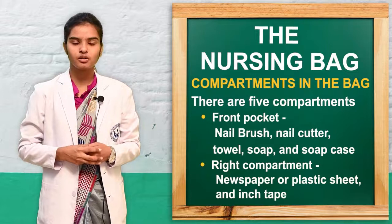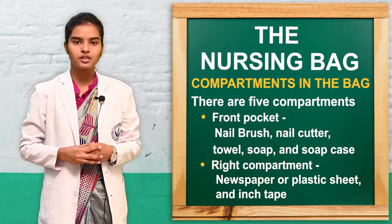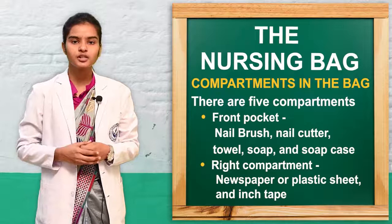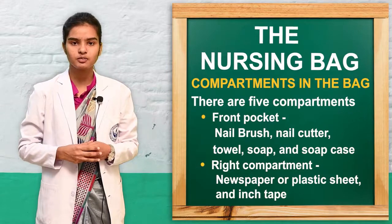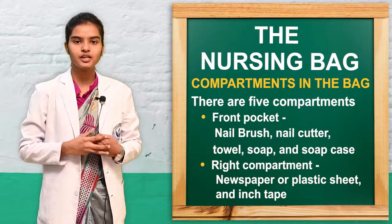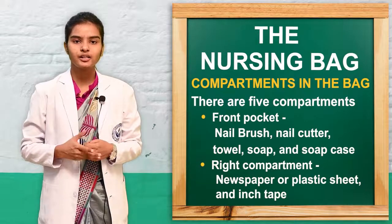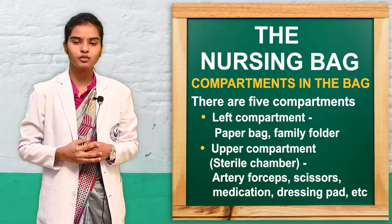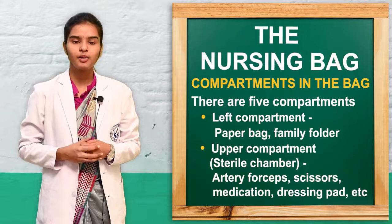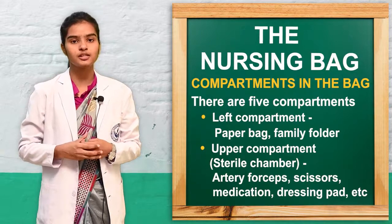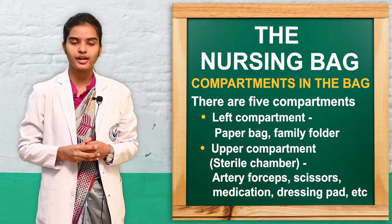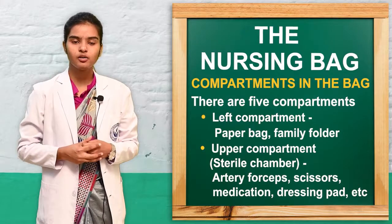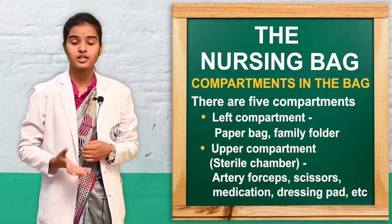There are five compartments in the bag. The first, or front pocket, contains the nail brush, nail cutter, soap dish, and soap. The right compartment is equipped with newspapers and stationery. The left compartment holds the family folder, pen, and diary. The upper compartment, also known as the sterile compartment, contains sterile equipment such as artery forceps, sterile gauze pads, cotton pads, medicines, antibiotics, syringes, and injections.